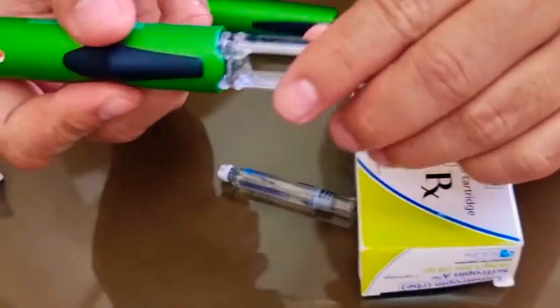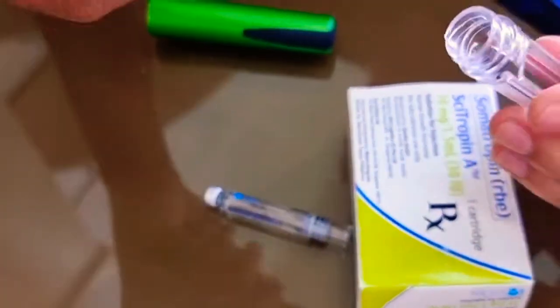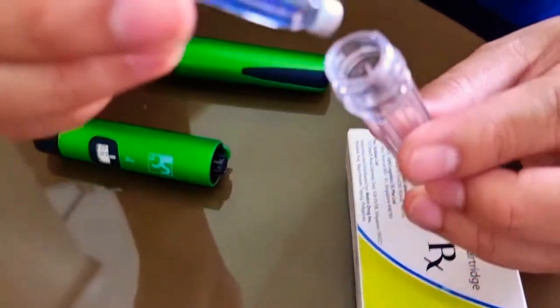So this is how you use the cytopin autoinjector pen. You open it, and then you remove the cartridge holder, just twist and pull it, and then put the cytopin vial inside.